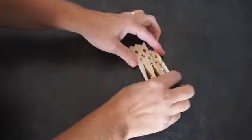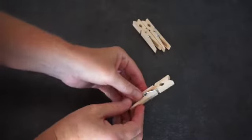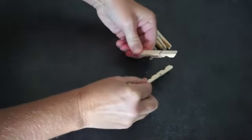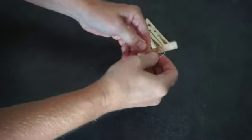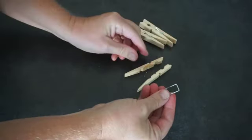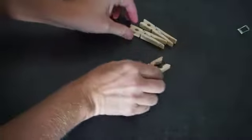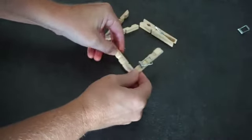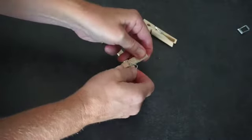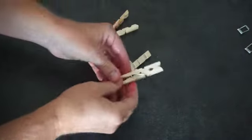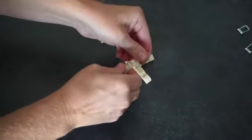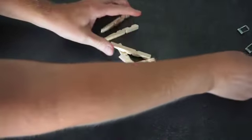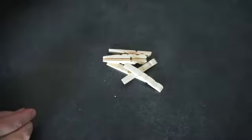The first thing you need to do is take your clothespins apart by twisting the base and taking the wire hinge off. You might want a grown-up to help but it's pretty simple to do. Just take the ends, twist, and the hinge will come right off. Do that for all three of your clothespins. We won't need the hinges for this project.